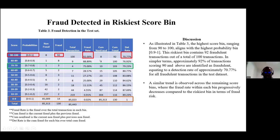The model determined the percentage of fraudulent activities detected in the riskiest score bin, which came out to be 92%, at a detection rate of 70.77%. That is a good result for real-time fraud detection performance.